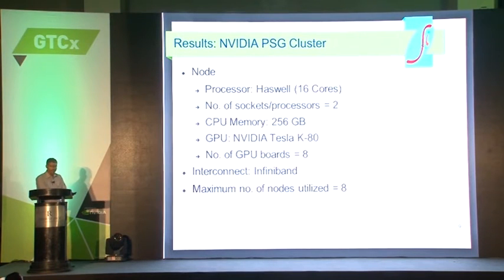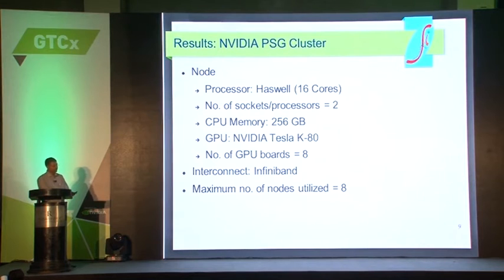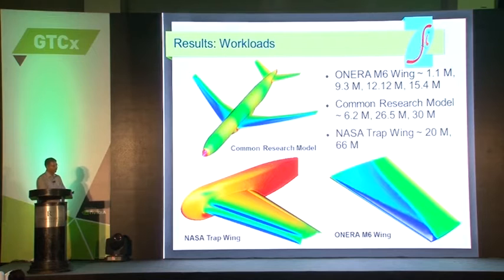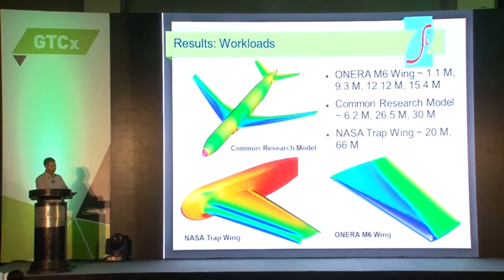We started off with testing on NVIDIA's PSG cluster. This cluster had nodes consisting of two Haswell processors — it's a two-socket board — with NVIDIA K40 GPUs, and there were eight GPUs per board. The interconnect is high-speed InfiniBand, and we used eight nodes to assess the performance on this cluster. We used different workloads for the analysis, starting from a simple wing configuration with grid size of 1.1 million volumes, all the way up to a complex high-lift NASA trap wing configuration with a grid size of 66 million.